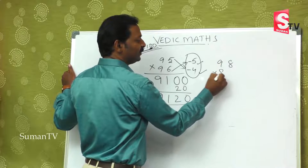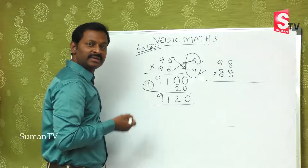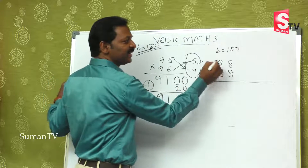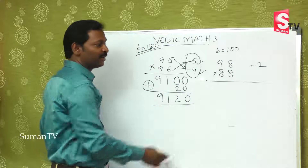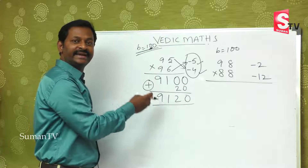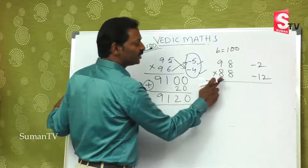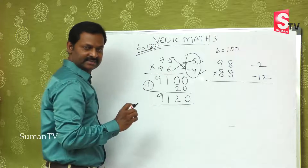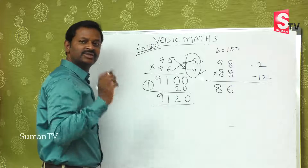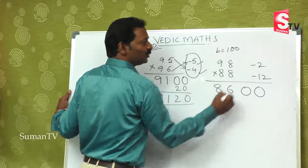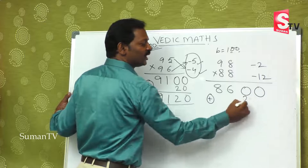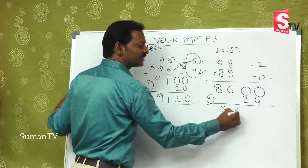For 98 is multiplied by 88: the base value is 100, no doubt. 98 is less than 100 by 2, so minus 2. 88 is less than 100 by 12, so minus 12. Because 88 plus 12 equals 100. So now: 88 minus 2 is 86. Or 98 minus 12 is also 86. First part of the answer is over. Base 100 means two zeros. Minus into minus is plus, so 2 × 12 is 24. Final answer is 8624.